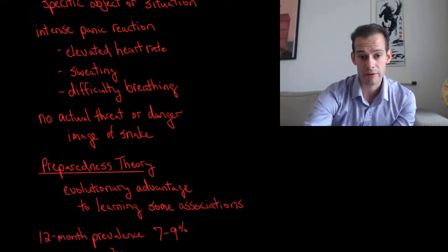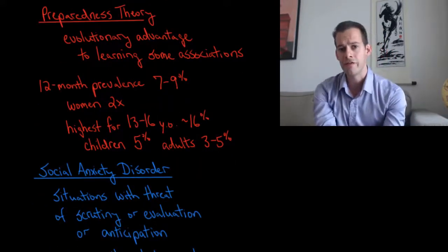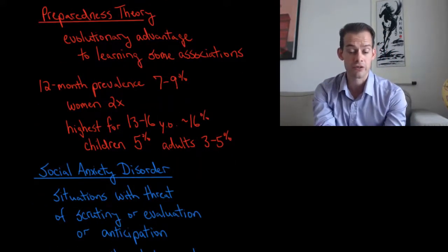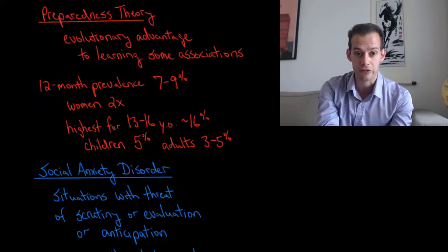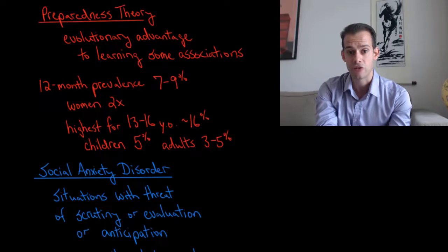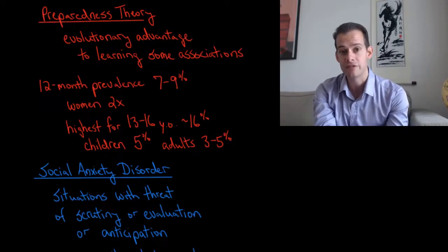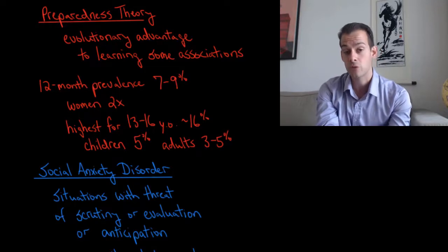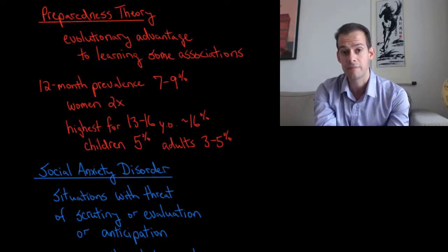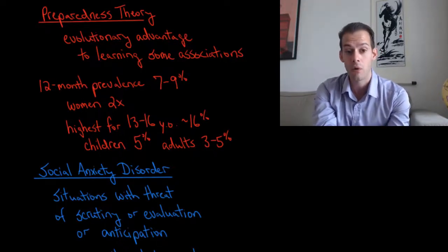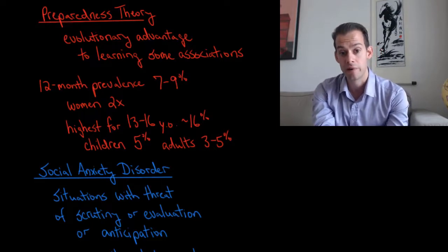And this relates to what's called preparedness theory and this suggests that there would be an evolutionary advantage for us to learn certain associations more easily than others. So it makes more sense to have a fear reaction to things that are potentially dangerous like snakes or spiders rather than things that are probably not so dangerous. And so we could think of this perhaps explaining why certain types of phobias are more common than others. Now the estimated 12-month prevalence for specific phobias is about 7 to 9 percent and they're twice as common in women compared to men. And the prevalence is highest amongst people who are about ages 13 to 16 with an estimated prevalence about 16 percent and then considerably lower for children at about 5 percent or for adults at about 3 to 5 percent.